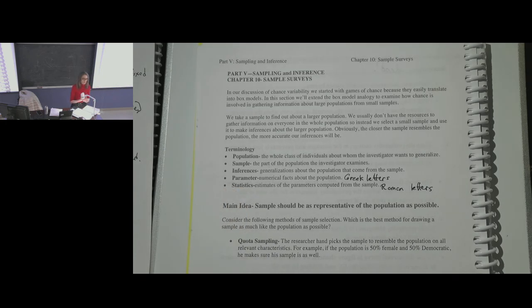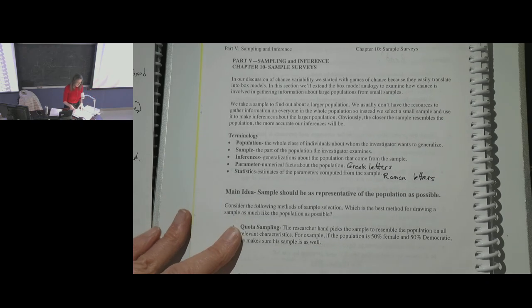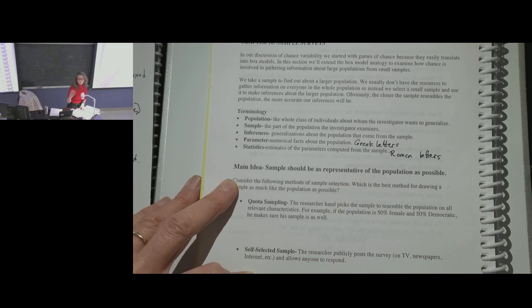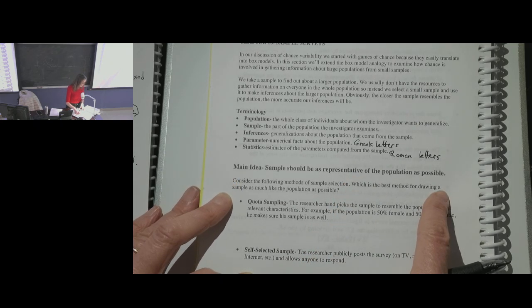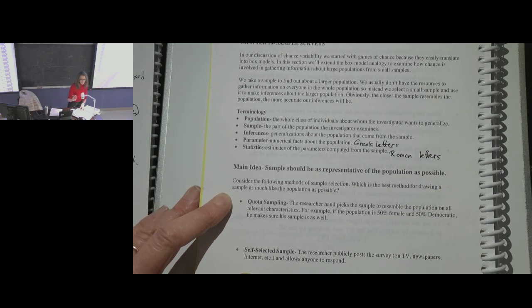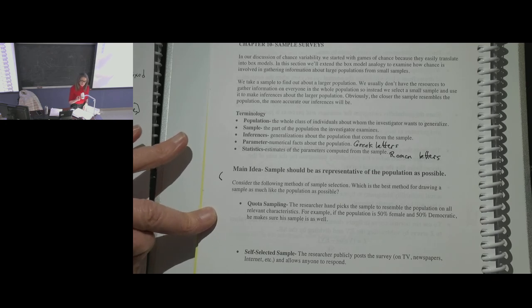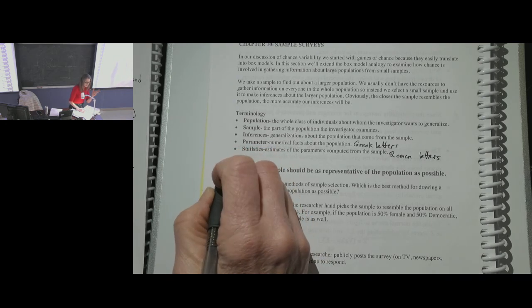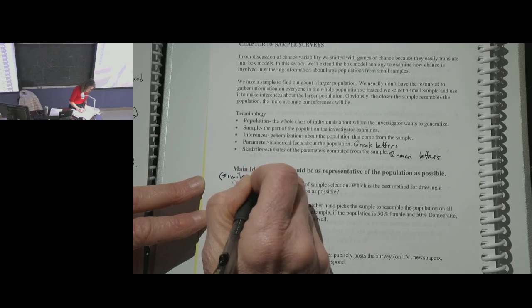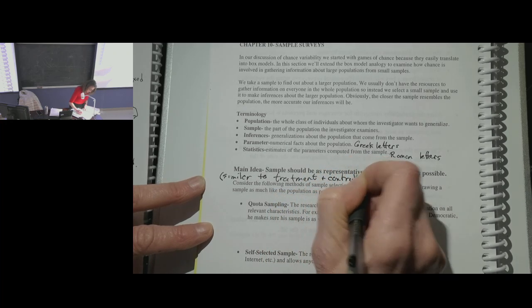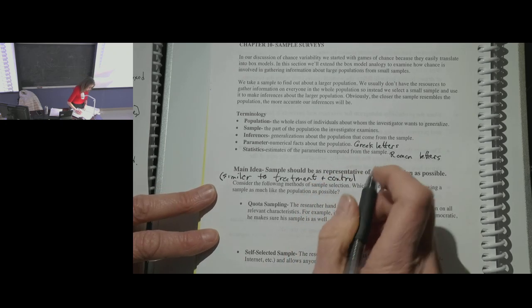The key idea: the population is fixed, we just don't know it. What's varying is our sample statistics — they bounce around. We attach standard errors to them as a measure of how much we think they're varying, following the square root law. The main goal is to have the sample be as representative of the population as possible, similar to how we wanted treatment and control groups to be as alike as possible in experiments.